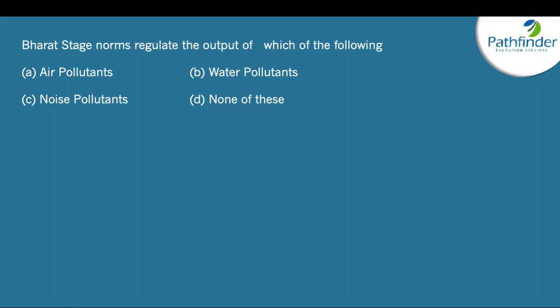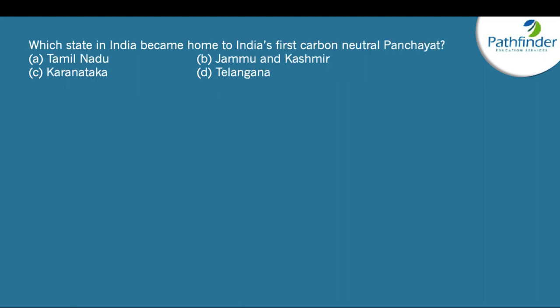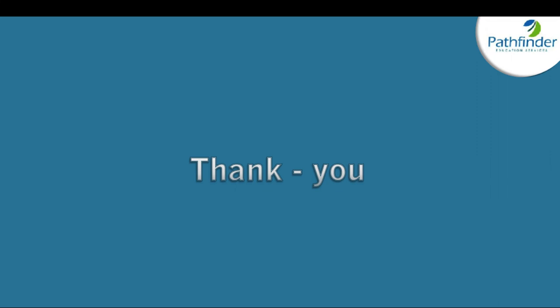Which Indian state is home to India's first carbon-neutral panchayat? The correct answer is Jammu and Kashmir. A hamlet called Pali, in the Samba district, has been declared the first carbon-neutral panchayat. A 500-kilowatt solar plant has been installed there, making this possible. With this we come to the end of the first session of TISNET GK — stay tuned to Pathfinder For Me for more, and the PDF for this session is available in the comments below.